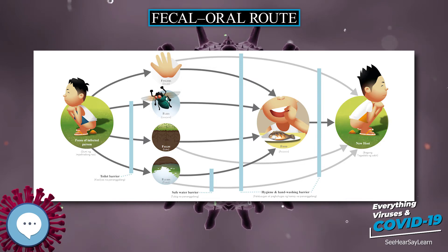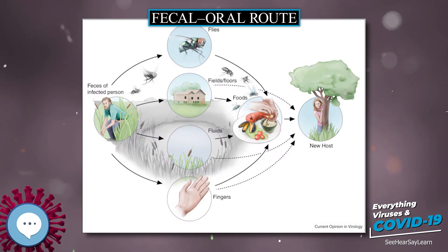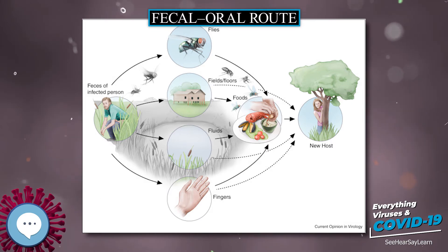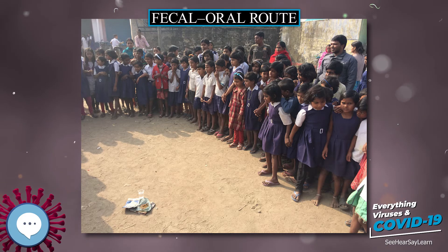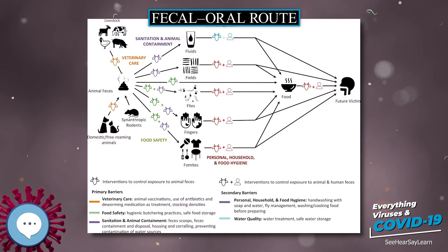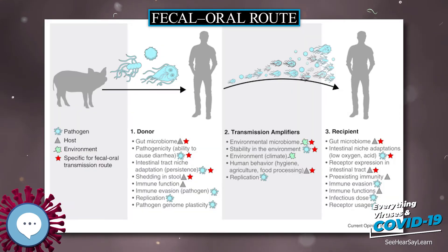The foundations for the F diagram being used today were laid down in a publication by WHO in 1958. This publication explained transmission routes and barriers to the transmission of diseases from the focal point of human feces. Modifications have been made over the course of history to derive modern-looking F diagrams, which are used in many sanitation publications.